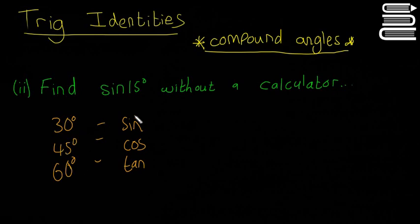What we're going to do is use the compound angle formula. We have to somehow make 15 degrees with a combination of these ones. So what we're going to do is say that 60 minus 45 equals 15.